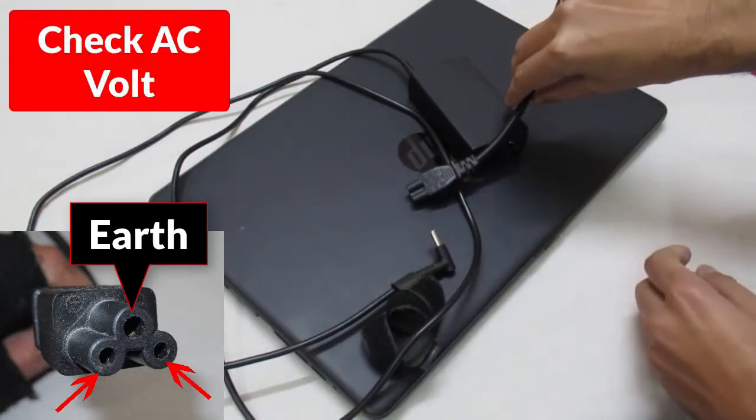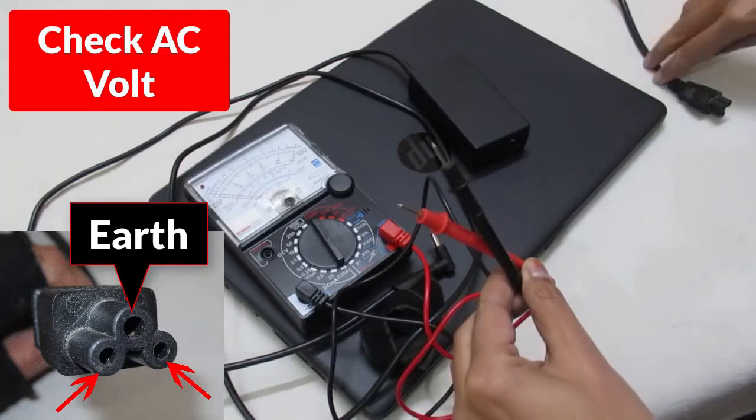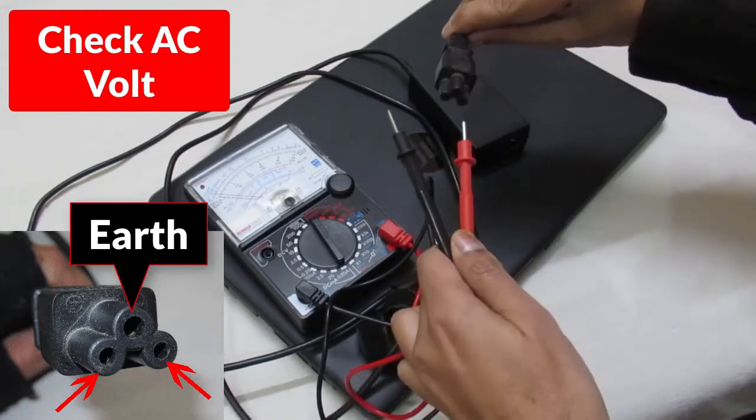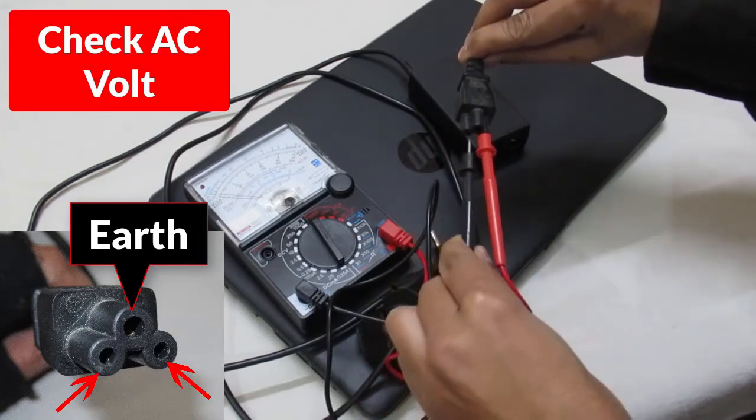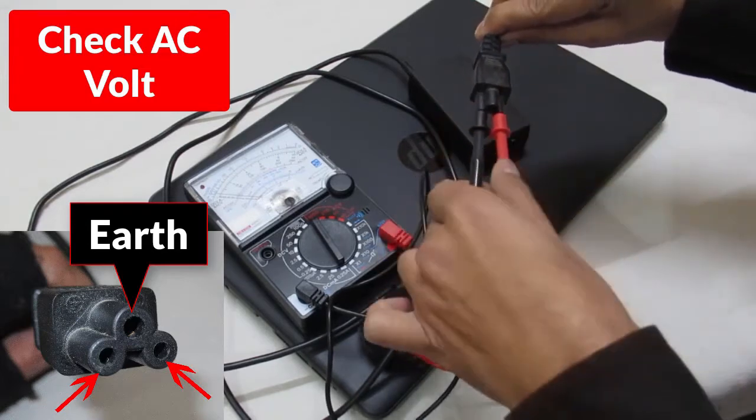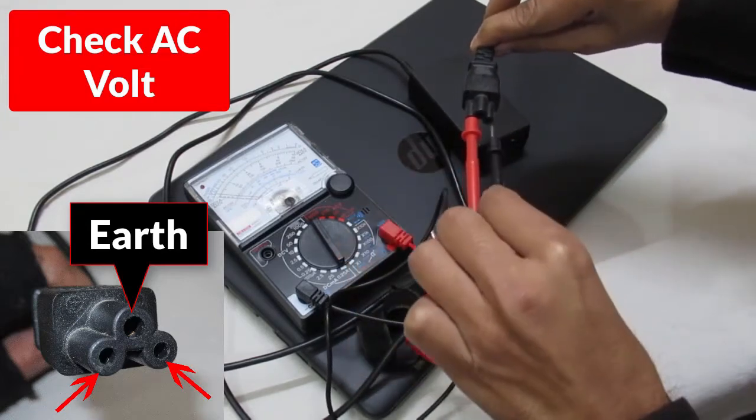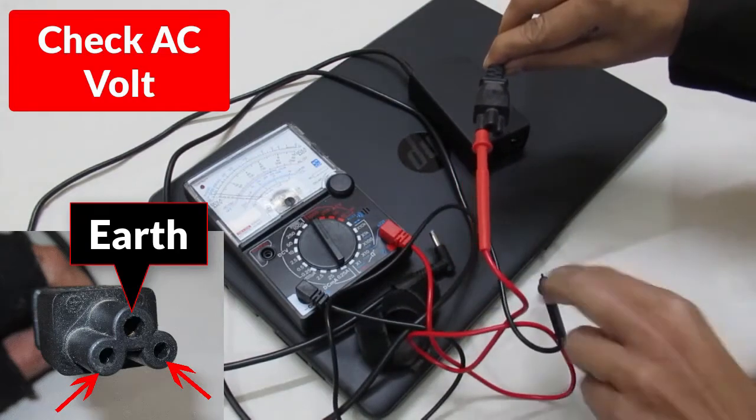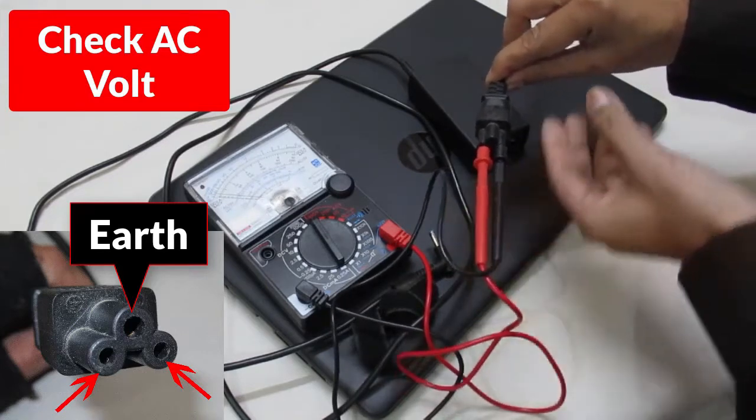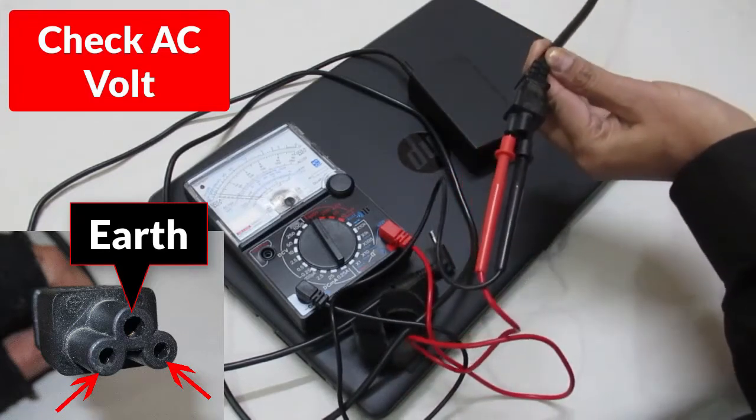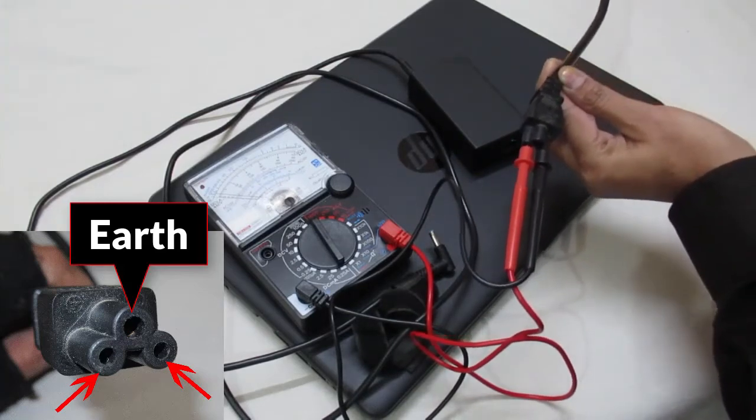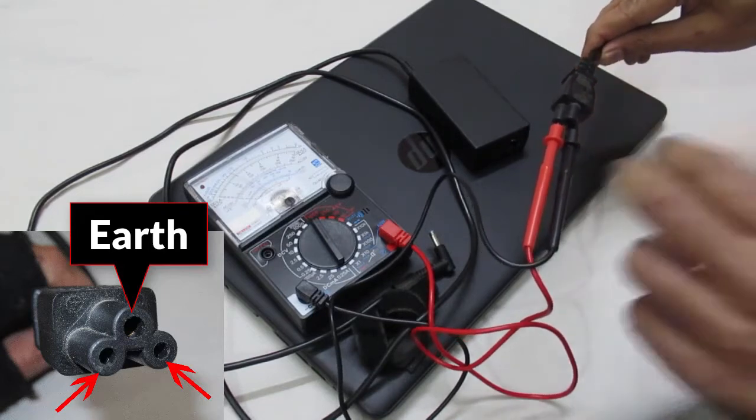Now let's check current flow in this cable with the help of a multimeter. I am using an analog multimeter. You can use a digital multimeter which is very convenient. Insert the multimeter probes and check AC voltage which comes out from this side. In my case, I will check approximately 220 volt AC, but you can check according to your domestic power supply.